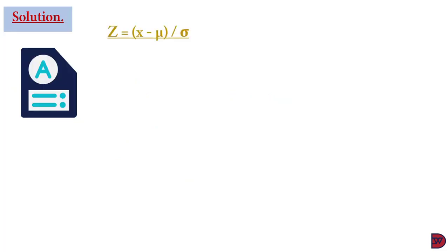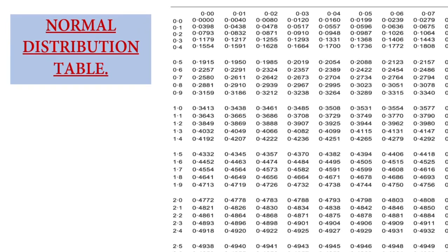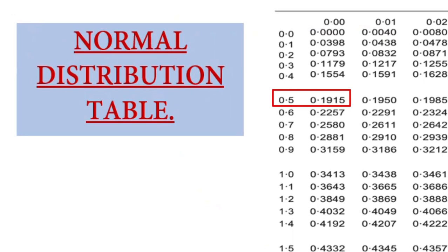For the solution, we state the z-score formula: z = (x − μ) / σ. For x = 110: z = (110 − 100) / 20 = 10 / 20 = 0.5. Looking up 0.5 on the normal distribution table gives us 0.1915.